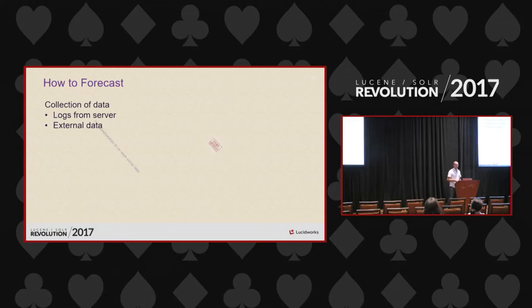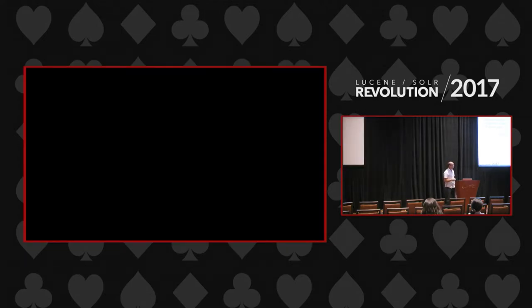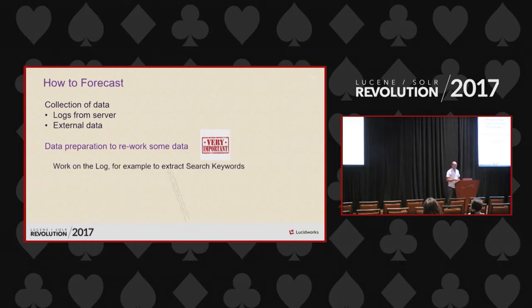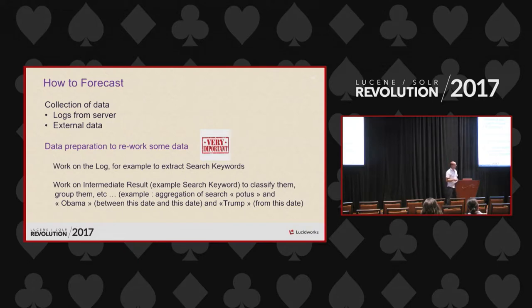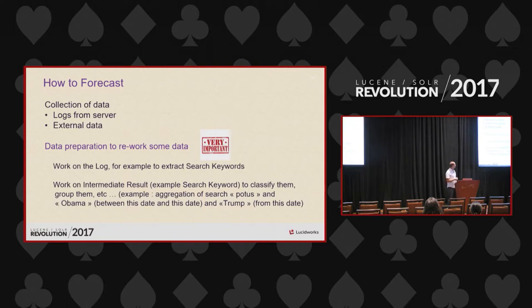How to forecast — it's very easy, but you need to rework your data. For example, if you want to study keyword activity around the president of the United States, you need to record POTUS searches, Obama searches between specific dates, and Trump searches between other dates. You cannot simply aggregate because in 2012 Trump was not president, so you need to classify and rework your data.